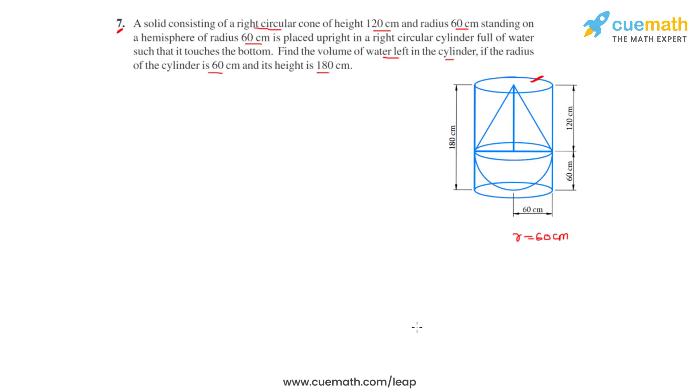The height of the cone is 120 cm. So we can write that small h equals 120 cm and the height of the cylinder which is capital H equals 180 cm.